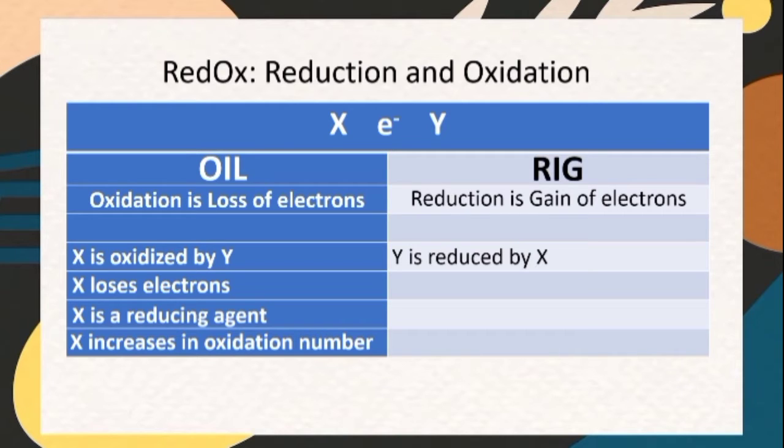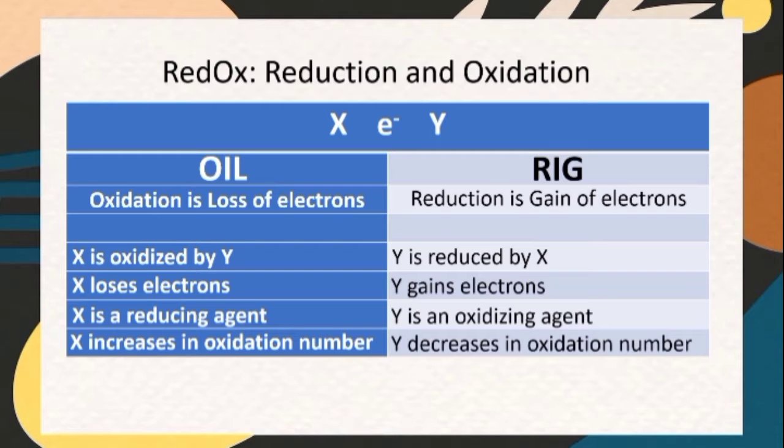While in RIG, Y is reduced by X. Y gains electrons, Y is an oxidizing agent, and Y decreases in oxidation number.